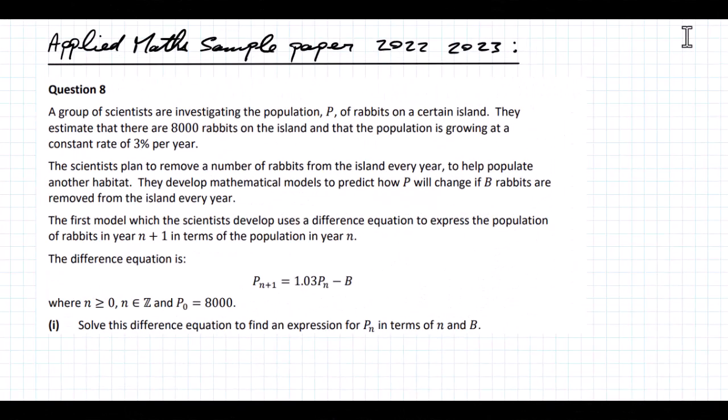In this video I'm going to have a look at question 8 from the Applied Math Sample Paper 2022-2023. A group of scientists are investigating the population P of rabbits on a certain island. They estimate that there are 8,000 rabbits on the island and that the population is growing at a constant rate of 3% per year.